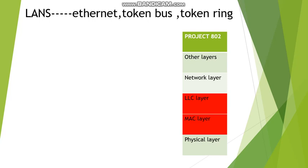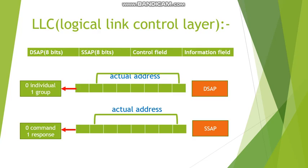The LLC sublayer deals with flow control and error control. The data unit in the LLC layer is called the Protocol Data Unit (PDU). The PDU contains four fields: Destination Service Access Point (DSAP), Source Service Access Point (SSAP), Control field, and Information field. The DSAP address field has 8 bits, of which 1 bit stores the address type of the destination and the remaining 7 bits store the actual address.